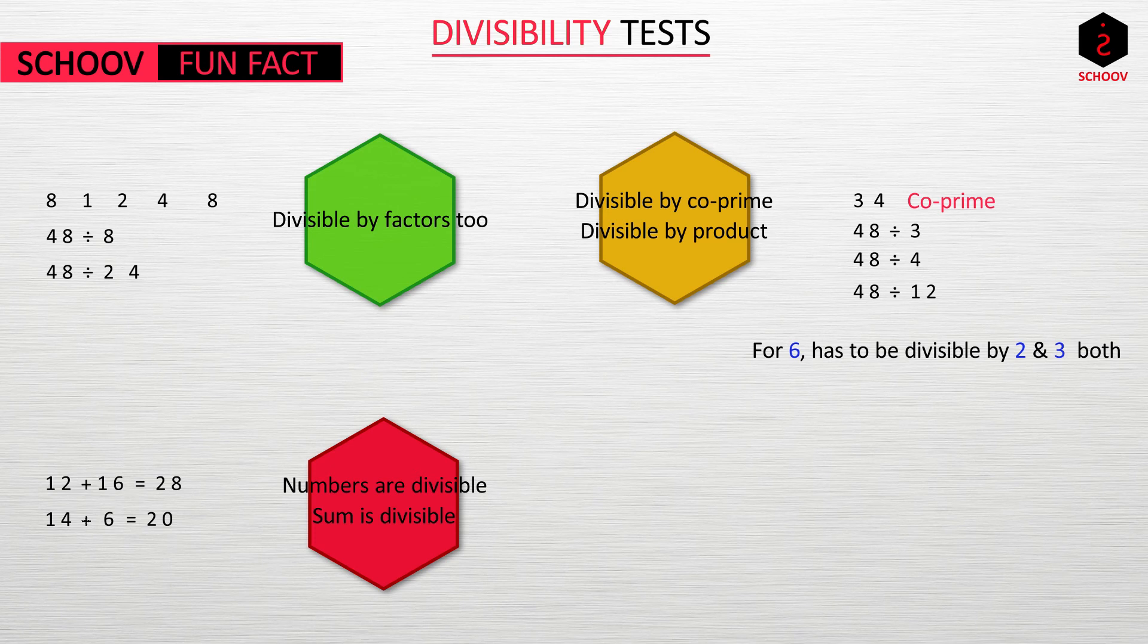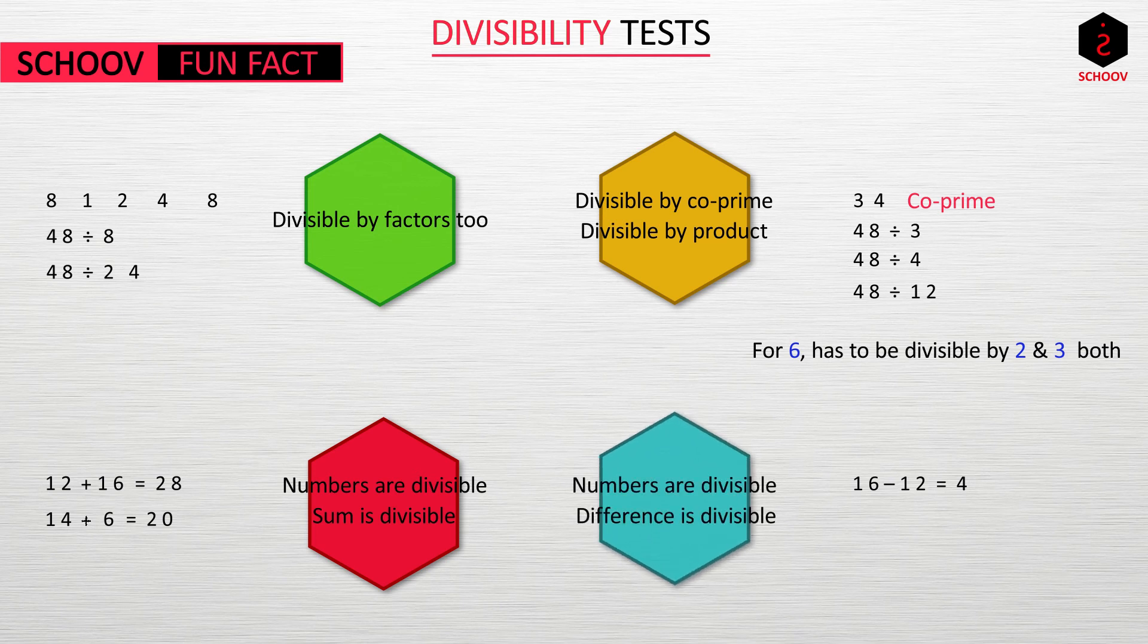And last is difference of numbers. 16 and 12 are divisible by 4. Their difference 4 is also divisible by 4. So numbers are divisible, difference is divisible. Again, reverse is not true. If difference is divisible, doesn't necessarily mean that numbers are also divisible. For example, 19 minus 7, which is 12, is divisible by 4 but 19 and 7 are not.